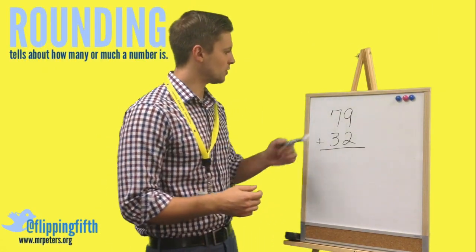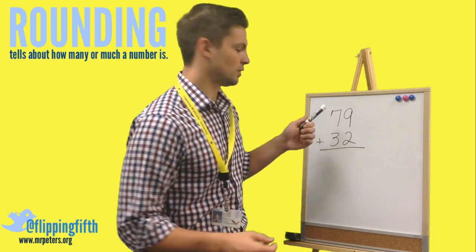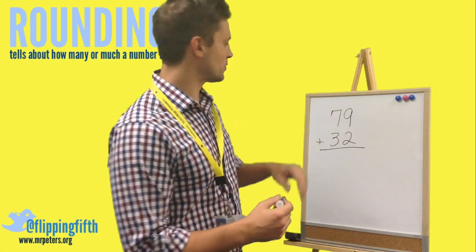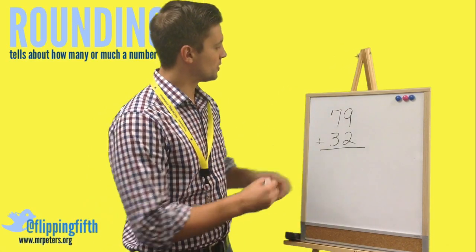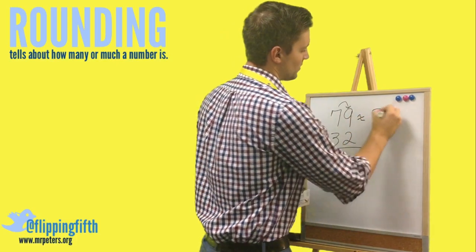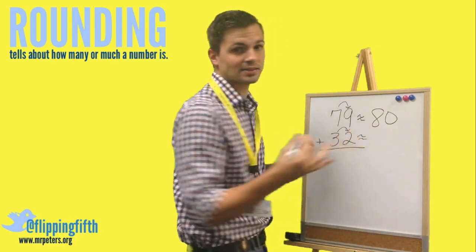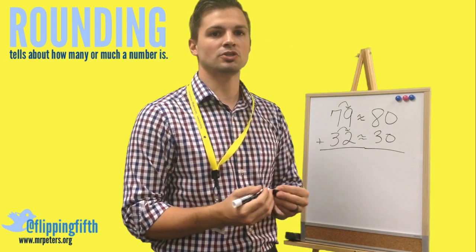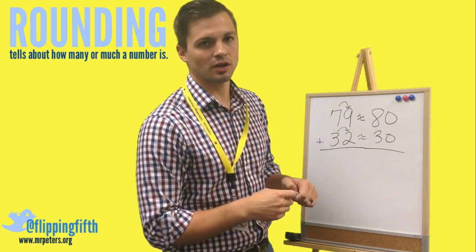This can also be done with whole numbers. For example, 79 plus 32 is not easy to compute mentally, so we want to find an estimated answer by rounding to the nearest tens place. 79 rounds up to 80, and 32 rounds down to 30. Then 80 plus 30 is much easier to manage — we get an answer of 110. Now you can try to solve a couple on your own.